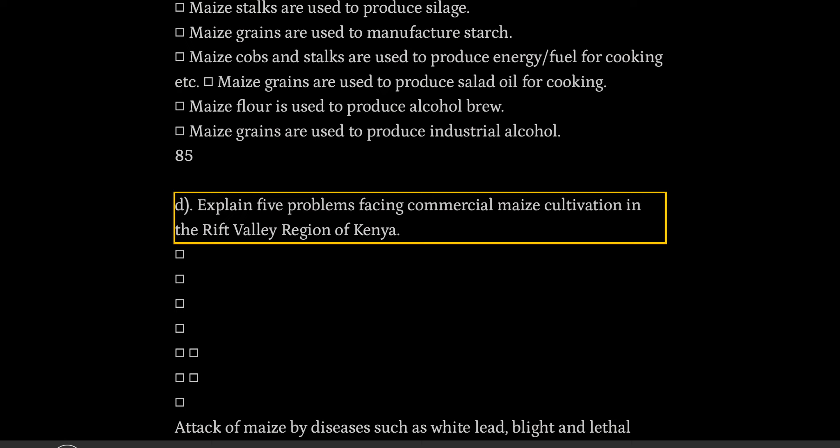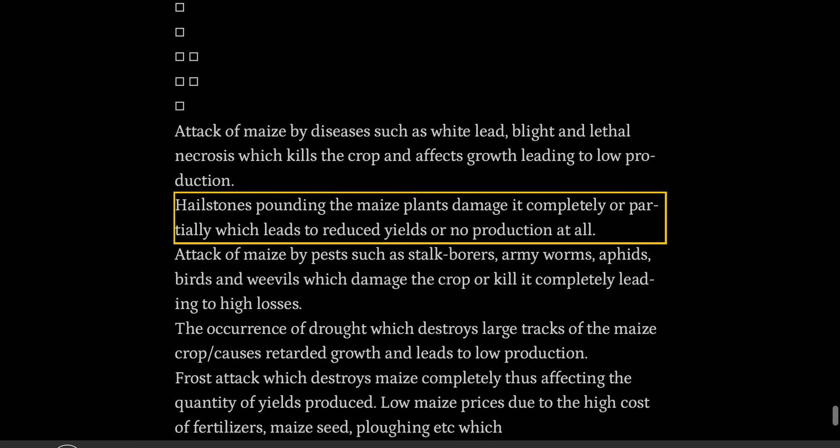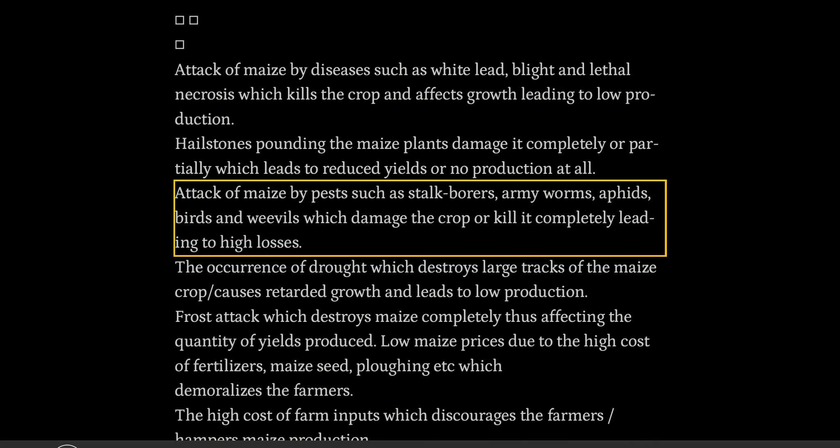Explain five problems facing commercial maize cultivation in the Rift Valley region of Kenya. Attack of maize by diseases such as white leaf blight and lethal necrosis, which kills the crop and affects growth leading to low production. Hailstones pounding the maize plants damage them completely or partially, leading to reduced yields or no production at all. Attack of maize by pests such as stalk borers, armyworms, aphids, birds and weevils, which damage the crop or kill it completely leading to high losses.